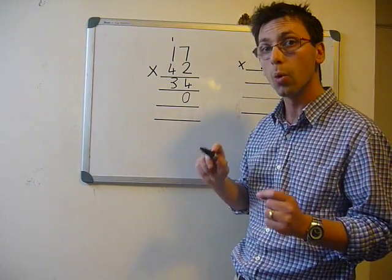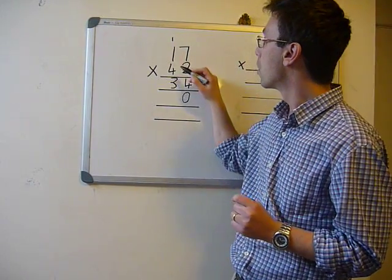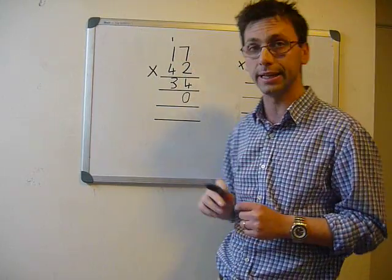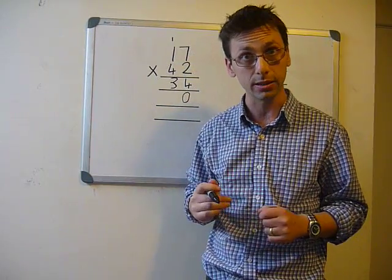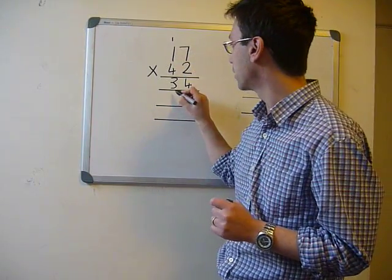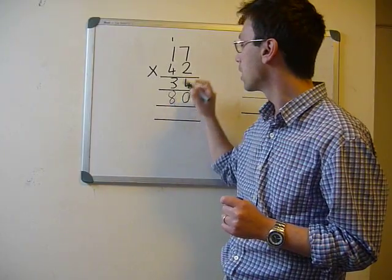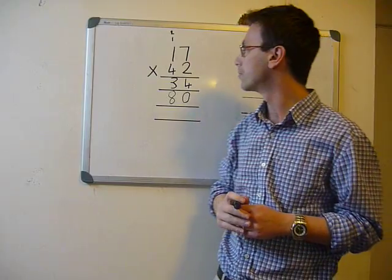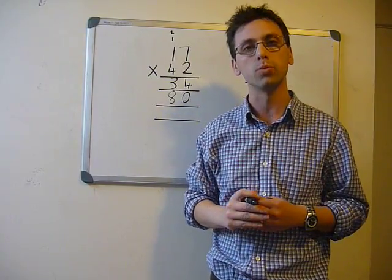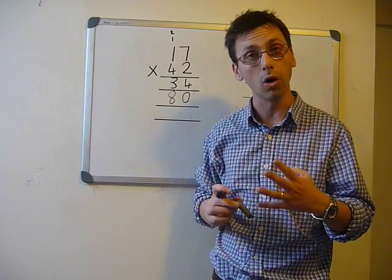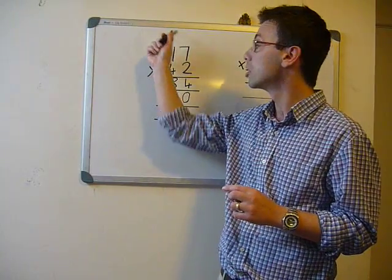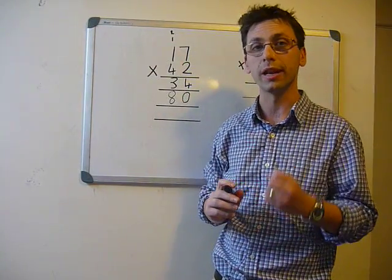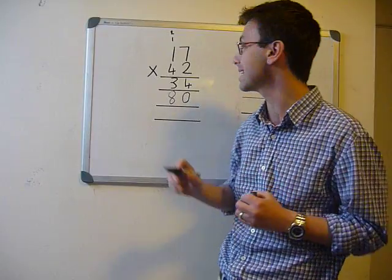Remember, we are going diagonally. 4 times 7 is 28. You put the 8 down underneath the number and carry the 2. 4 times 1 equals 4 and we have to carry on the extra 2, so the number is 4 plus 2 is 6.